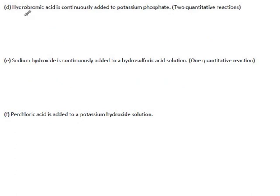Hydrobromic acid is HBr, but not when it hits water. Then it becomes H3O. It's continuously added to potassium phosphate. Well, that would dissolve into potassium, which doesn't matter, and phosphate ions.